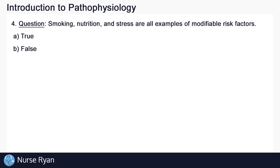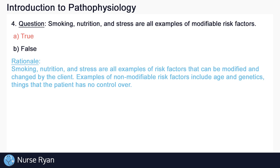Question number four: smoking, nutrition, and stress are all examples of modifiable risk factors. The answer here is A, true. Smoking, nutrition, and stress are all examples of risk factors that can be modified and changed by the patient. Examples of non-modifiable risk factors include things like age and genetics — things that the patient has no control over.